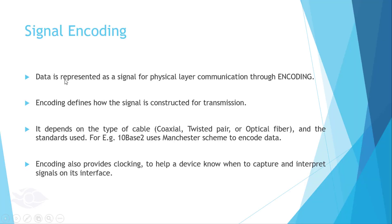Data is represented as a signal for physical layer communication through a process known as encoding. The method of encoding depends on the type of cable and the standard used. For example, 10Base2 uses the Manchester scheme to encode data. Another reason for encoding is to provide a clocking mechanism between the sender and receiver. Clocking helps a device know when to capture and interpret signals on its interface.